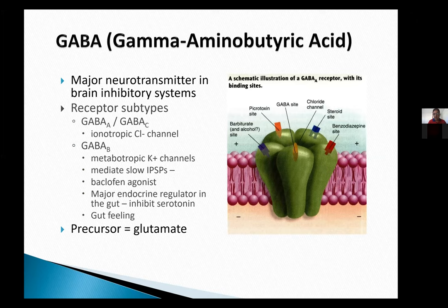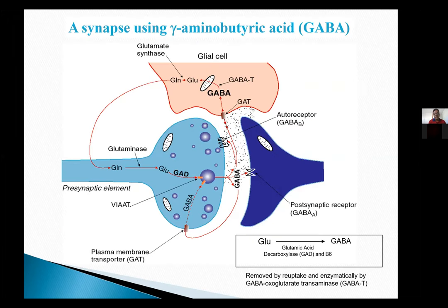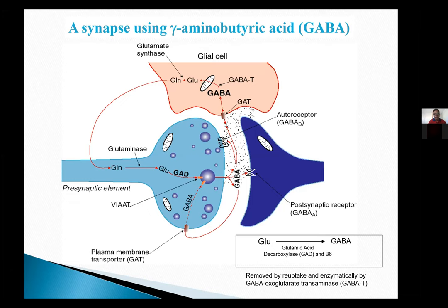Glutamate is the precursor for GABA. This diagram shows how GABA has a tripartite system just as glutamate does. GABA can be taken up by the astrocyte or glia as well as the presynaptic neuron. When it enters the glial cell, it can reconvert into glutamate, which then exits as glutamine to enter the presynaptic neuron, where it is broken down into glutamate and then packaged into vesicles and released through exocytosis into the synaptic cleft — demonstrating the extreme close interaction between glutamate and GABA.